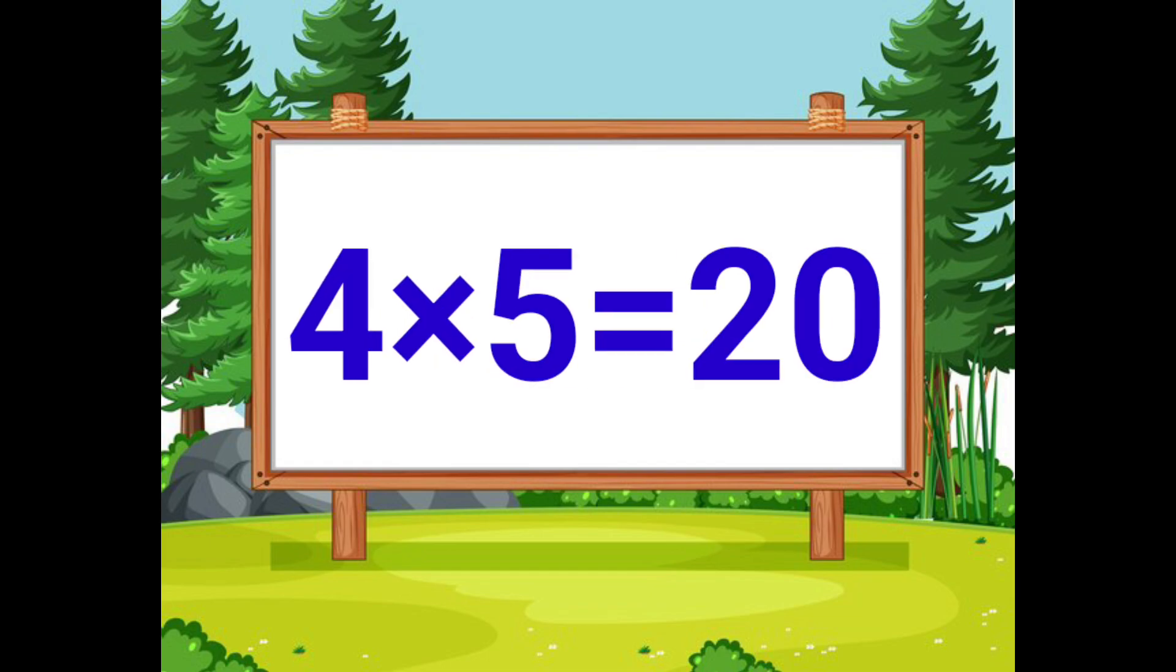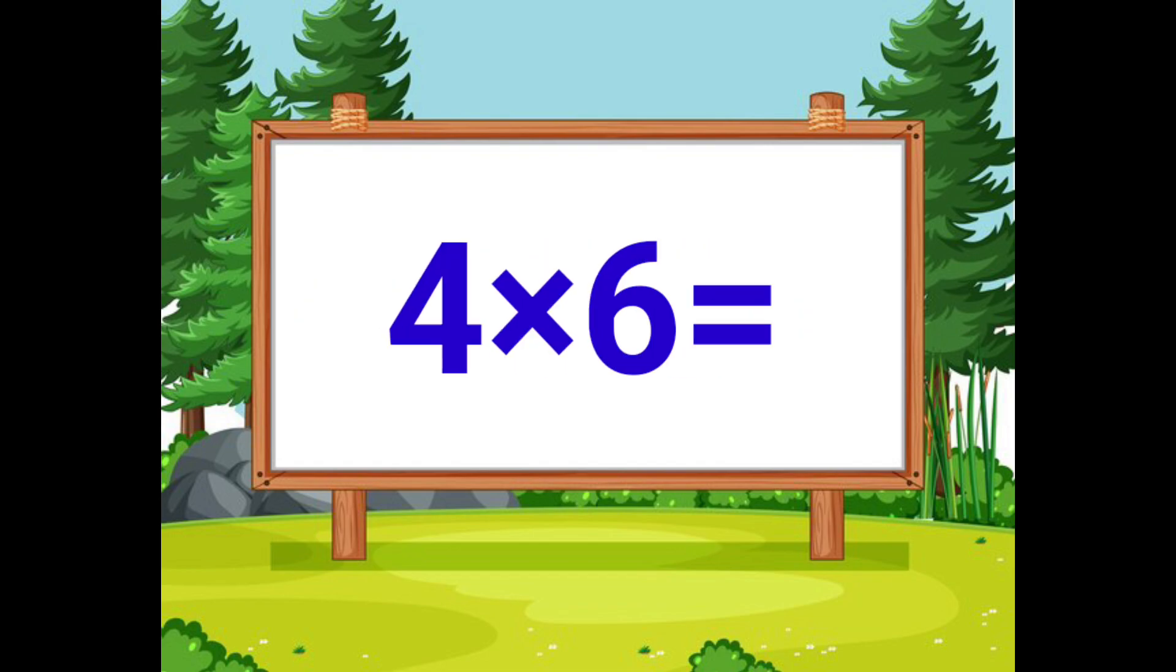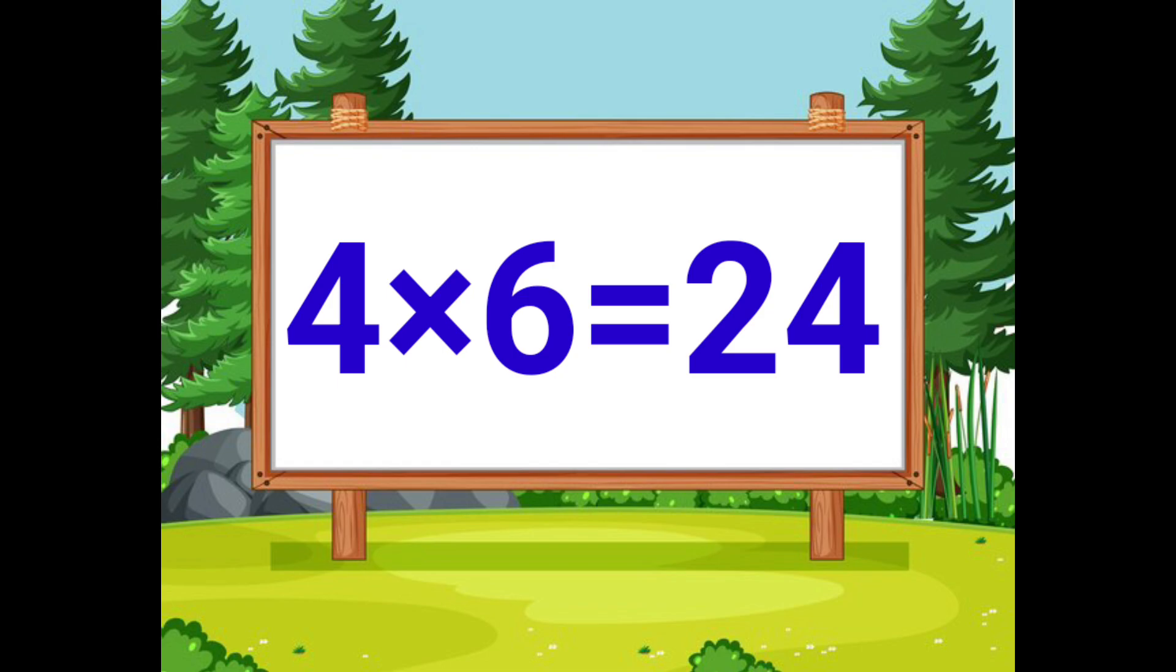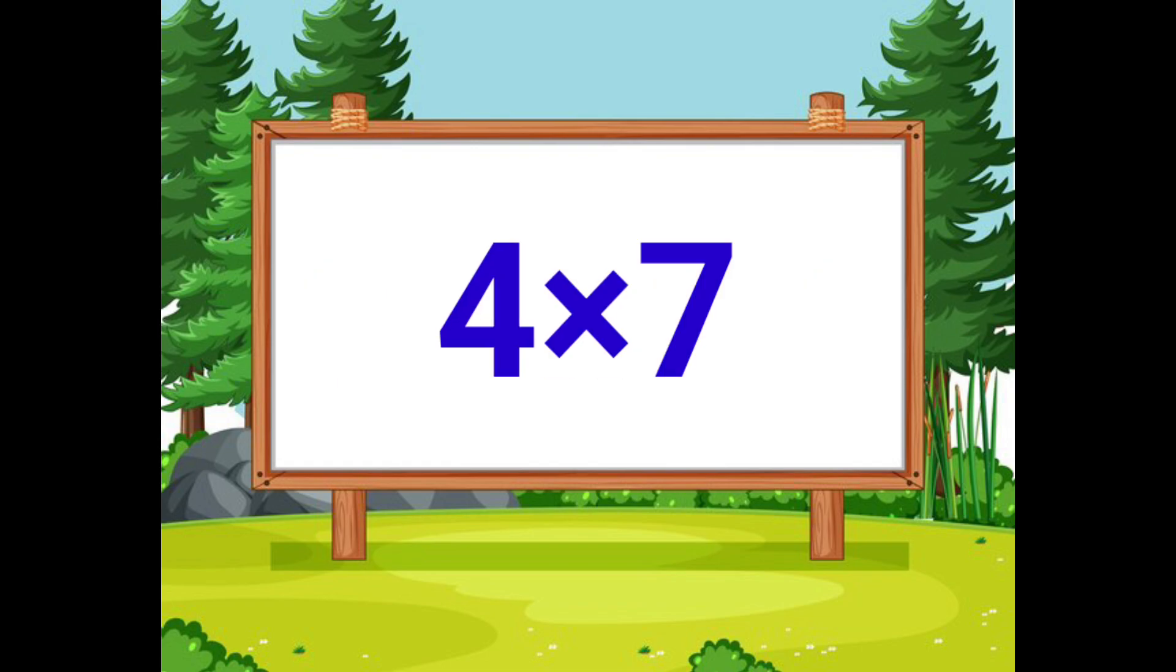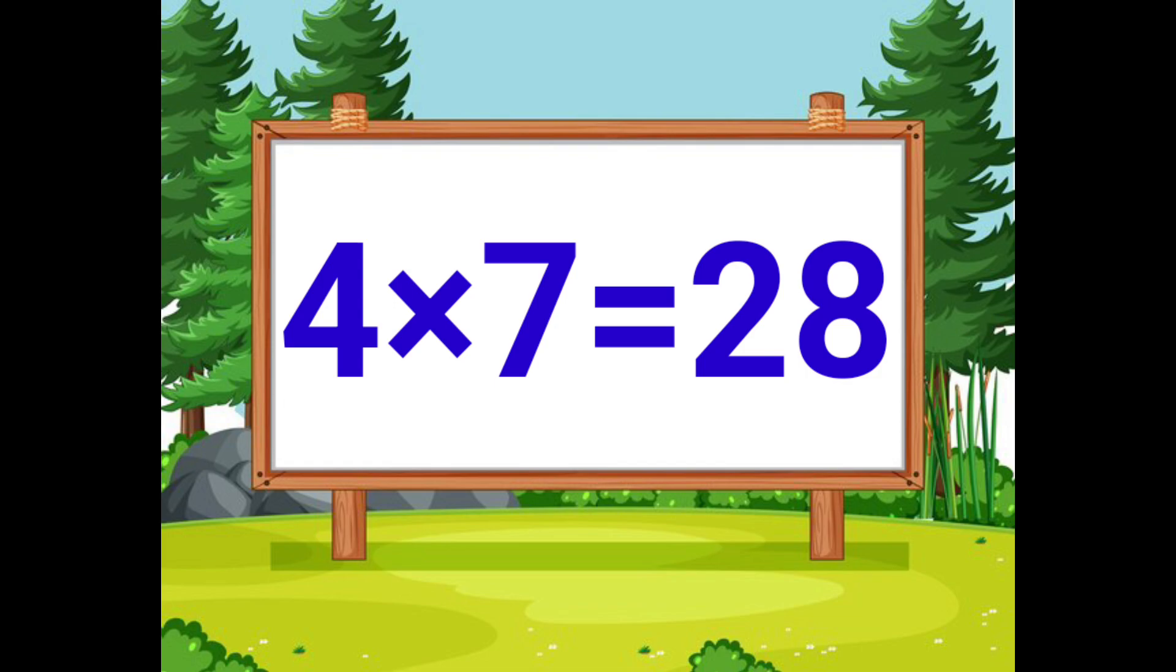Four fives are twenty. Four sixes are twenty-four. Four sevens are twenty-eight.